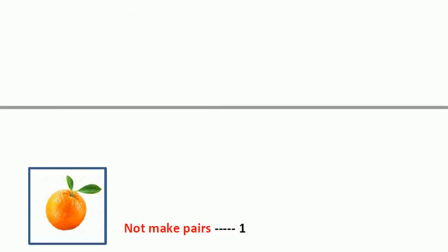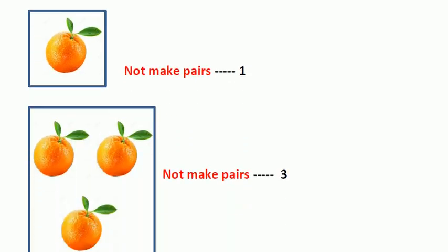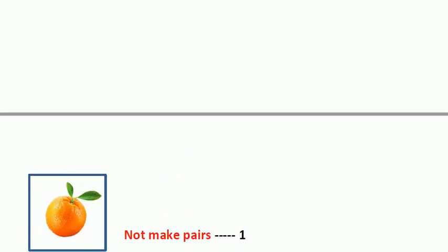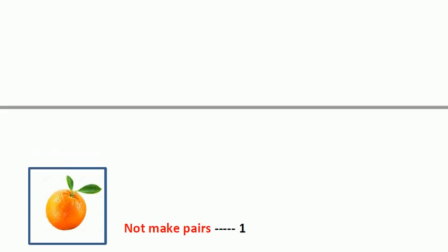Now look at this picture. In this picture you can see an orange. Do the oranges make a pair? No, the orange is not making a pair.